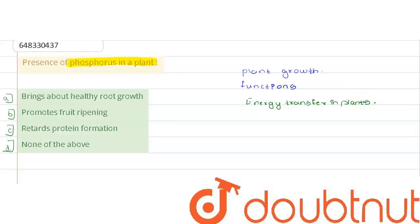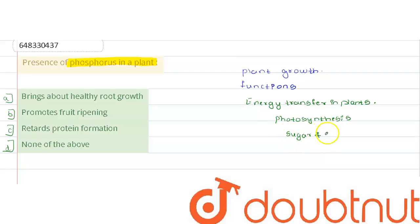Phosphorus is involved in the transformation of sugars and starches, photosynthesis, and nutrient movement within the plant. It also helps transfer genetic characters from one generation to the next.